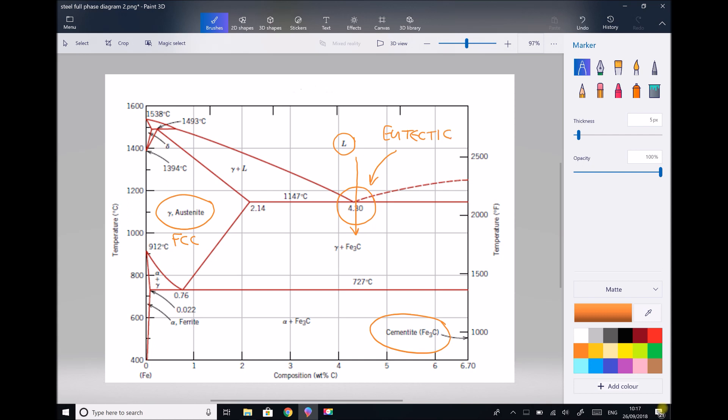When steel has a composition of 4.3% carbon, we have our eutectic composition. At carbon contents of around 4.3%, what we're really referring to is our cast irons.